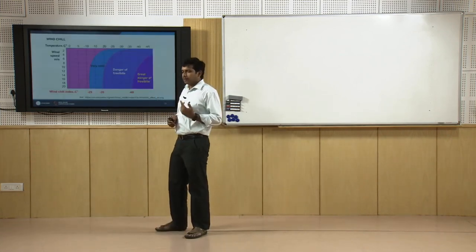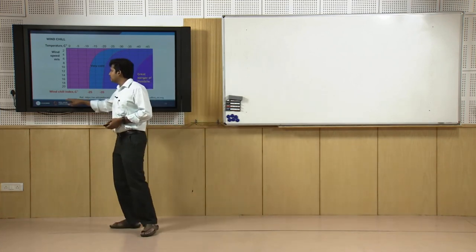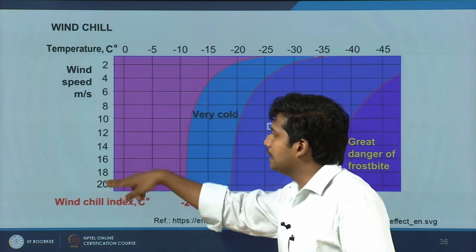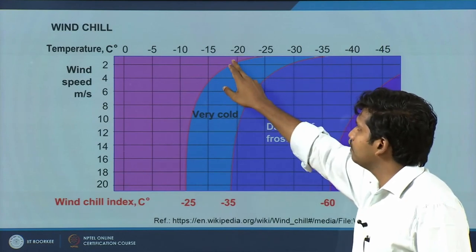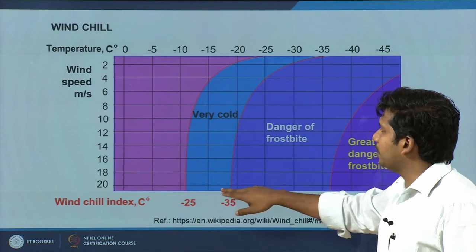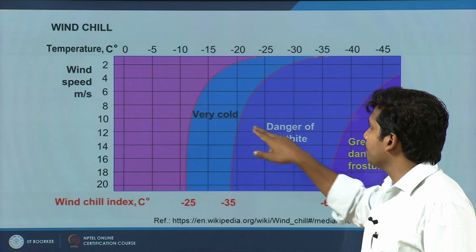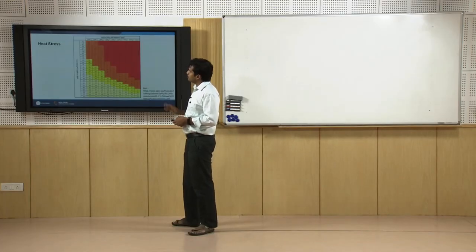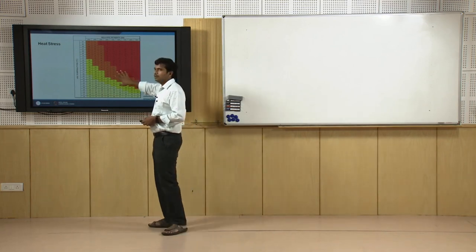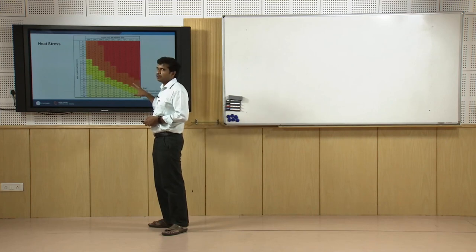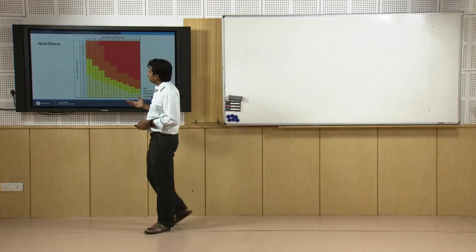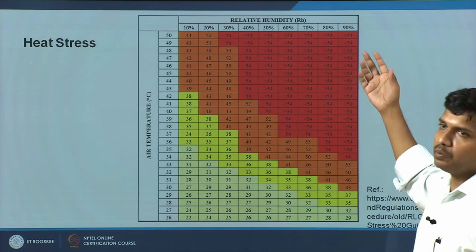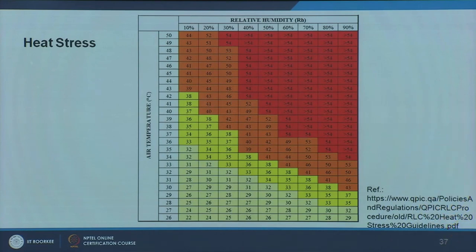Regarding draught in external environments: the wind chill index shows that below freezing point, the same 20 degrees temperature at 2 meter per second versus 20 meter per second air velocity feels very different — with real danger of frostbite. In hotter environments, heat stress indices like Heat Stress Index and Wet Bulb Globe Temperature (WBGT) combine air temperature and humidity; as both increase, the heat stress index rises.